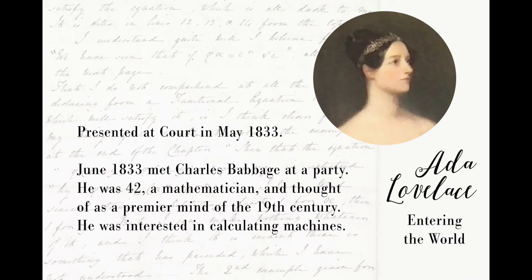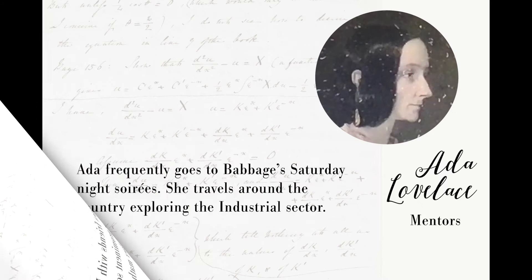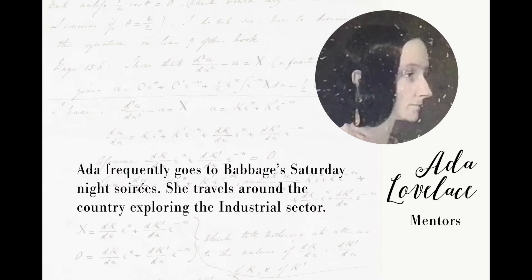She was presented at court in May of 1833, and in June of 1833 she met Charles Babbage at a party. He was 42, a mathematician, and thought of as a premier mind of the 19th century, and he was interested in calculating machines. She kept in touch with him from then on through correspondence with letters. In 1834, she became friends with Mrs. Mary Somerville, who was a prominent scientist of her time, and helped Ada with her math and became sort of like a family member. Ada frequently went to Babbage's Sunday night soirees and traveled around the country exploring the industrial sector by looking at mills and factories, because she was fascinated by scientific discoveries and industry.